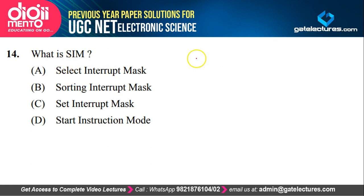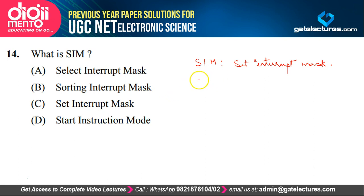They are asking what is SIM. This is not talking about your mobile SIM — this is an instruction in the 8085 microprocessor, which stands for Set Interrupt Mask. The 8085 has a number of interrupts, and you can mask — meaning delay or stop — some interrupts from coming using this SIM instruction. There is another instruction called RIM — Read Interrupt Mask — which lets you know the status of those interrupts. You load some values into the accumulator and then give the SIM instruction, after which some interrupts can be masked or unmasked.